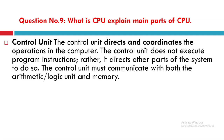The control unit directs and coordinates the core operations in the computer. The control unit does not execute program instructions; rather, it directs other parts of the system to do so. It controls the operations and decides where results are stored.